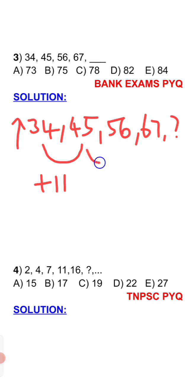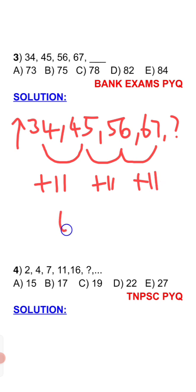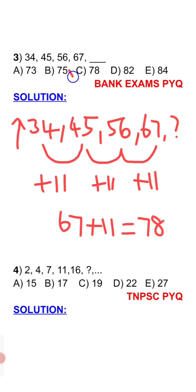Next, 45 and 56: plus 11. And 56 and 67: the addition is also plus 11. So the pattern is constant addition of 11. Therefore, 67 plus 11 gives 78. The answer is option C. 78 is the correct answer.